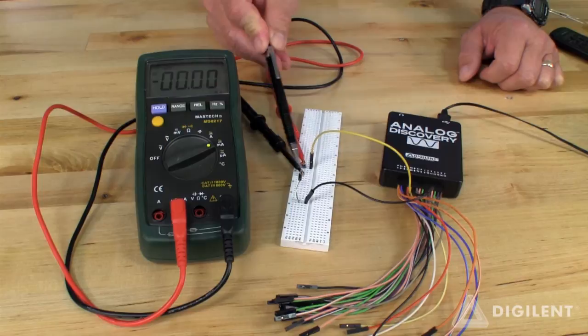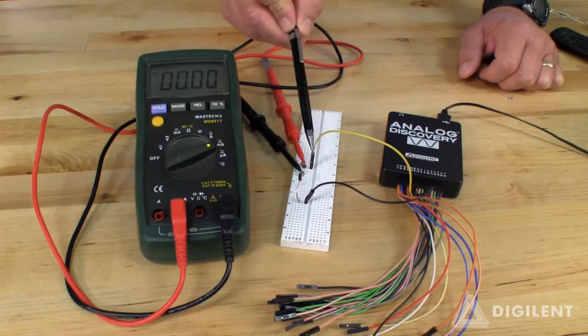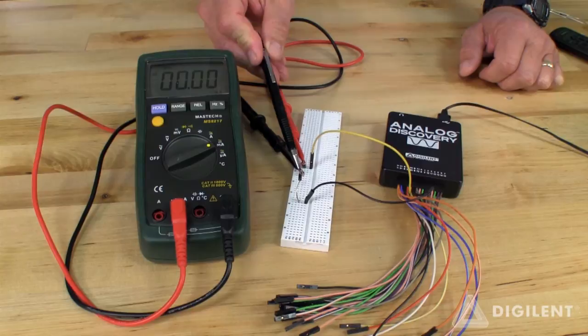The circuit we're using consists simply of a diode. We'll use the analog discovery waveform generator to apply voltage across the overall system. Our digital multimeter is connected between the waveform generator and the diode so that we can display current here.